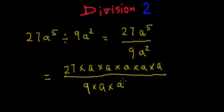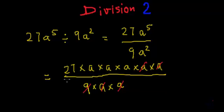The first a of the denominator will cancel one a in the numerator. And this second a will cancel one more a in the numerator. And the numbers will divide each other.